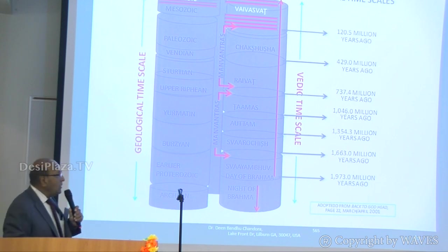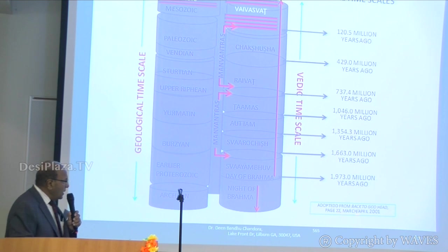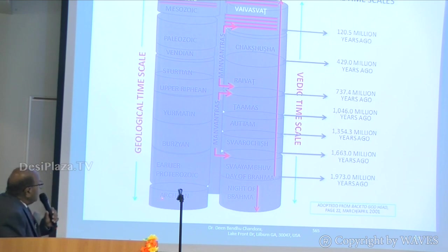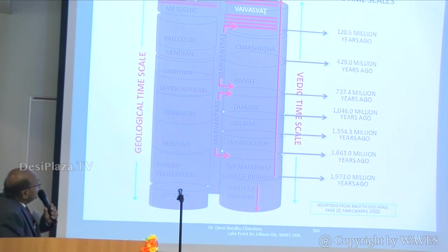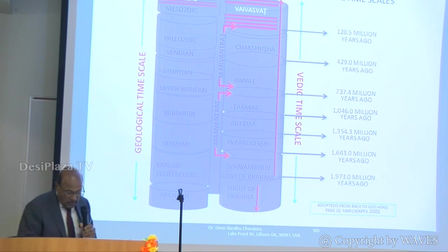Regarding geological correlation — I adopted this from the Back to Godhead magazine, 2001. These are the various geological time scales and their Vedic terminology equivalents. Currently, the Vivaswat Manvantara — the Mesozoic or Cenozoic state — is running. Seven Manvantaras have passed, and currently the eighth Manvantara is running. There are fifteen total, so seven more Manvantaras are still to come.